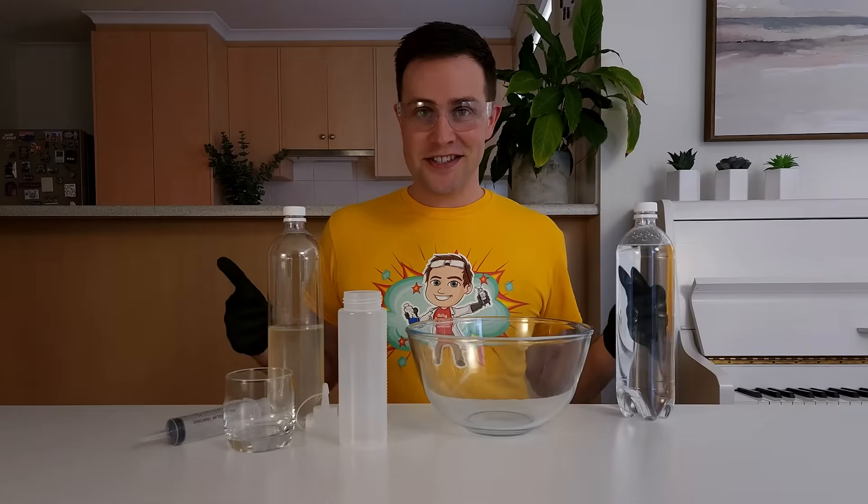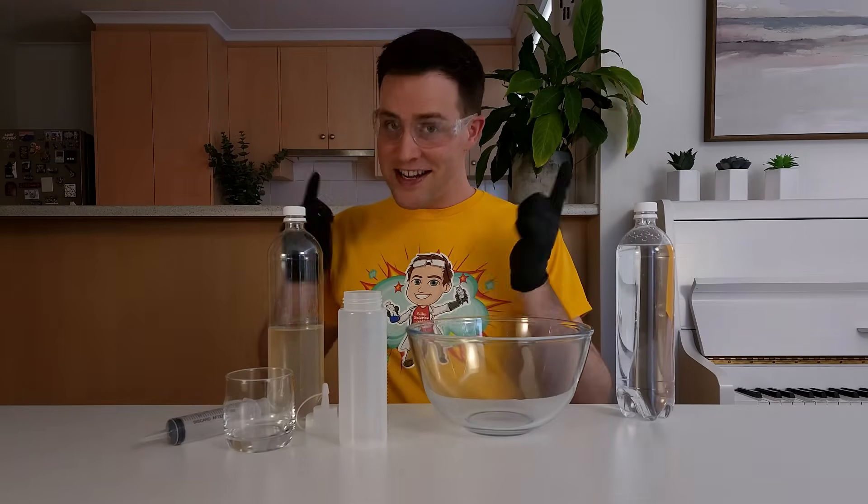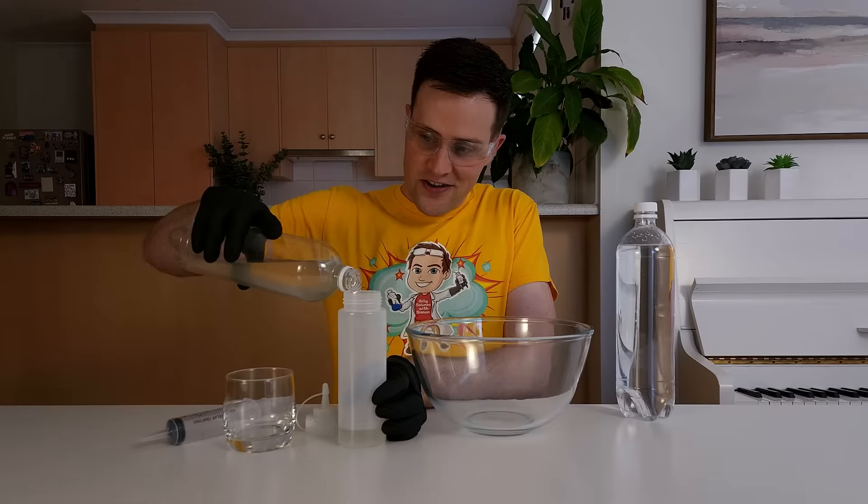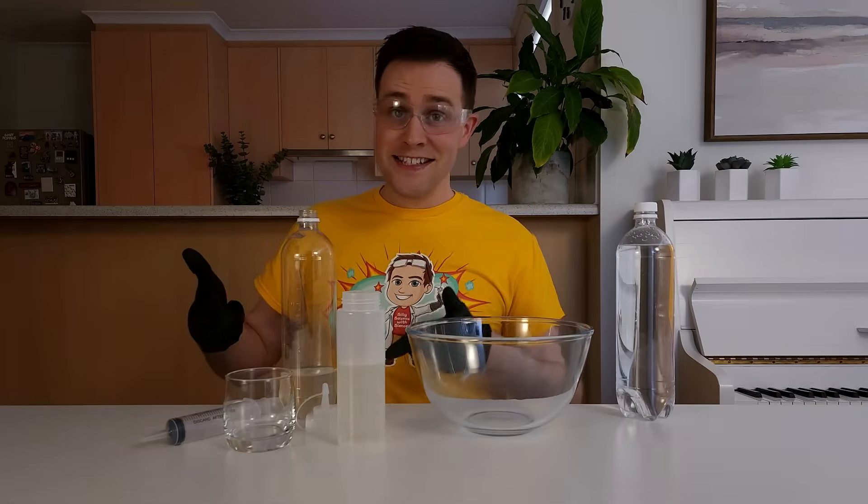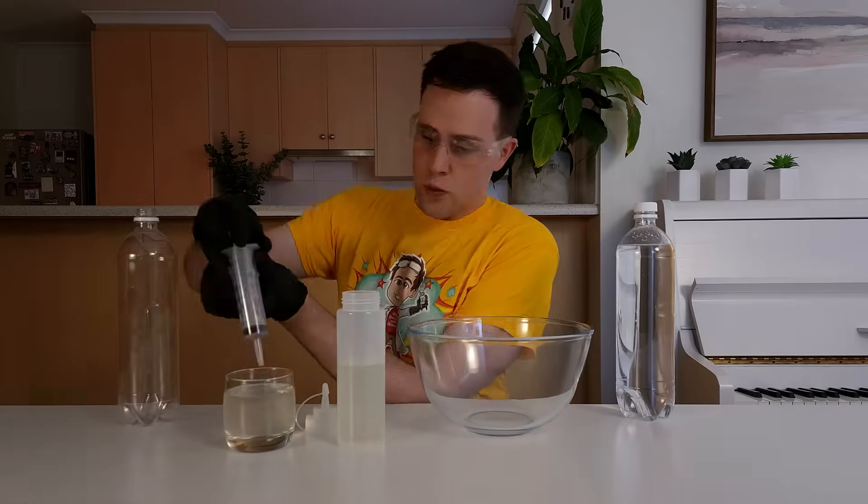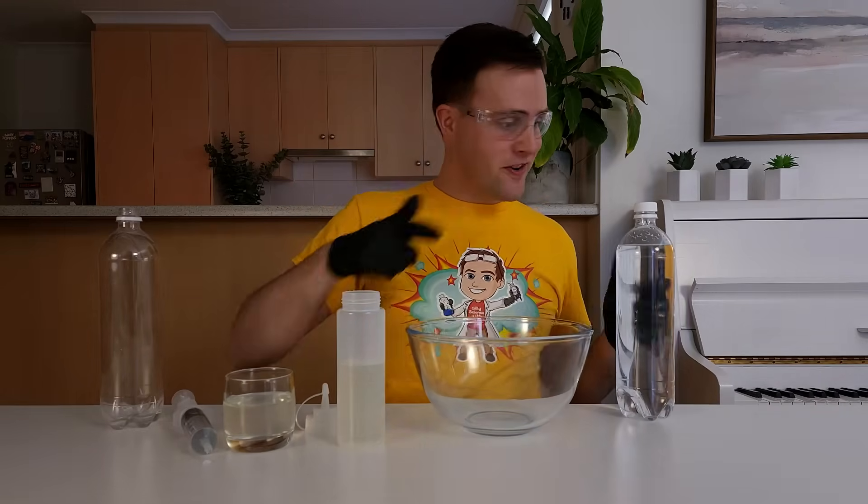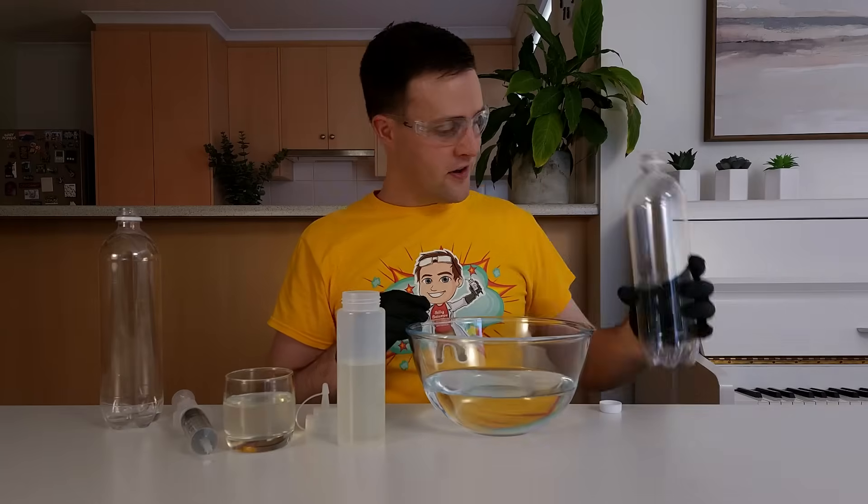Once you've made these two solutions, pour the sodium alginate solution into a sauce bottle, or place it in a cup and suck it up with a syringe. Then add the calcium chloride solution to the bowl, and we're ready to make some instant worms.